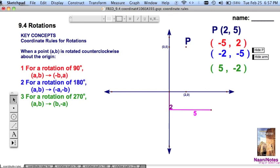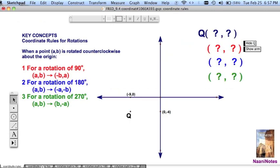A, B, two, five maps to negative five, two. Or I should say opposite of five, two. Two, five for 180, negative two, negative five. And two, five for 270, five, negative two. Let's do one more example.